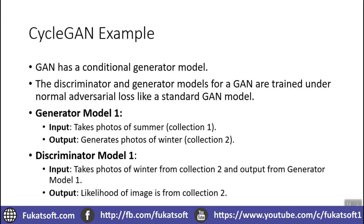A conditional generator model is one where, unlike a standard generator network that takes random noise and generates samples belonging to a particular domain, we also have an input condition. In a conditional generator network, we have an input image that can extract some information and the output can be conditioned on it. The discriminator and generator models for the GAN are trained under the normal adversarial loss, like the standard GAN model.